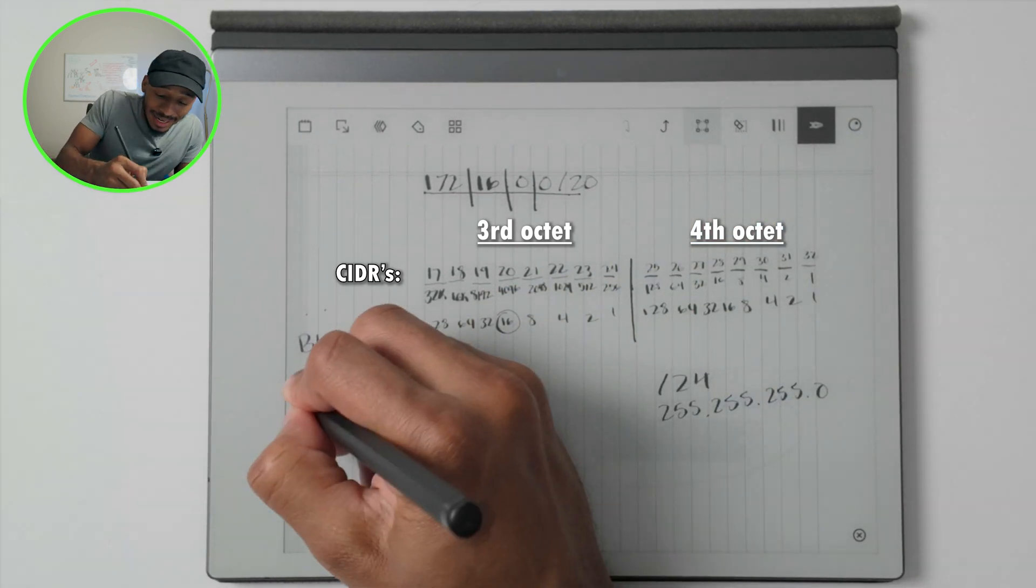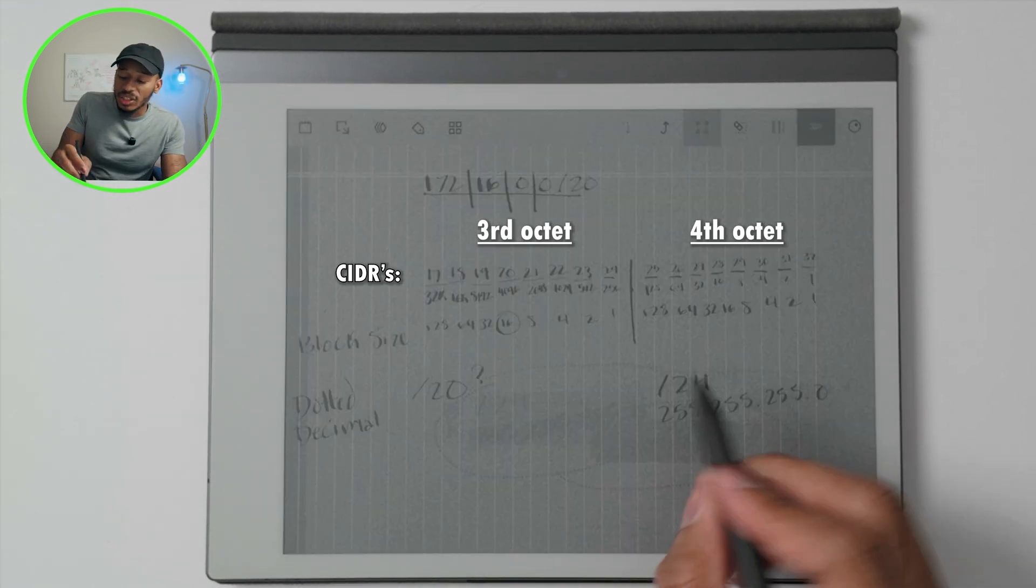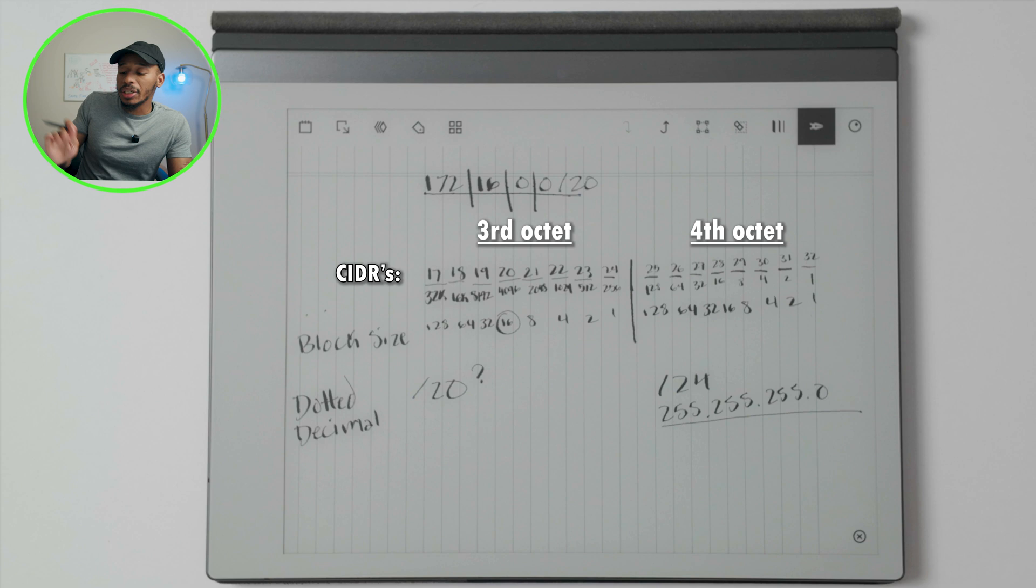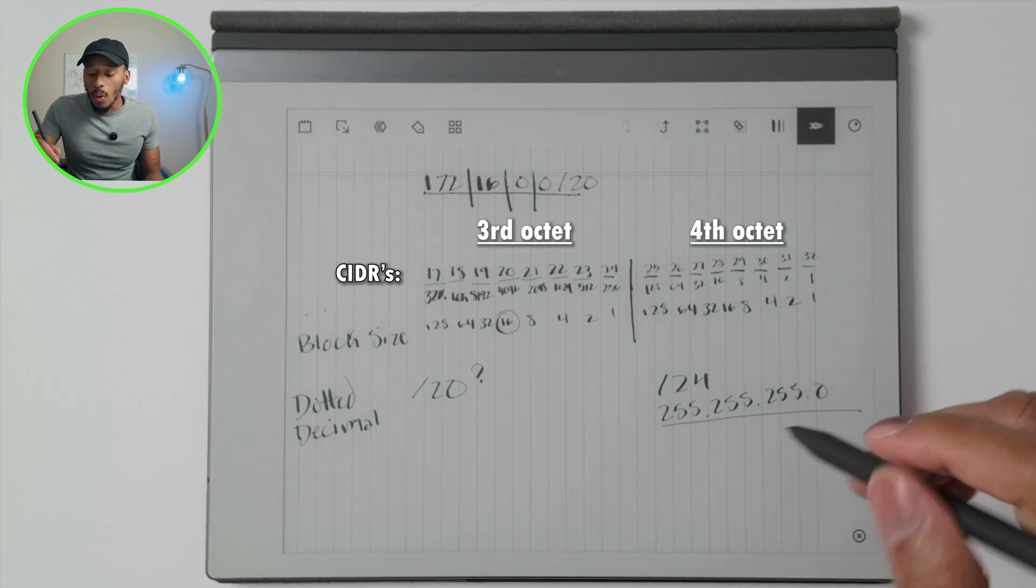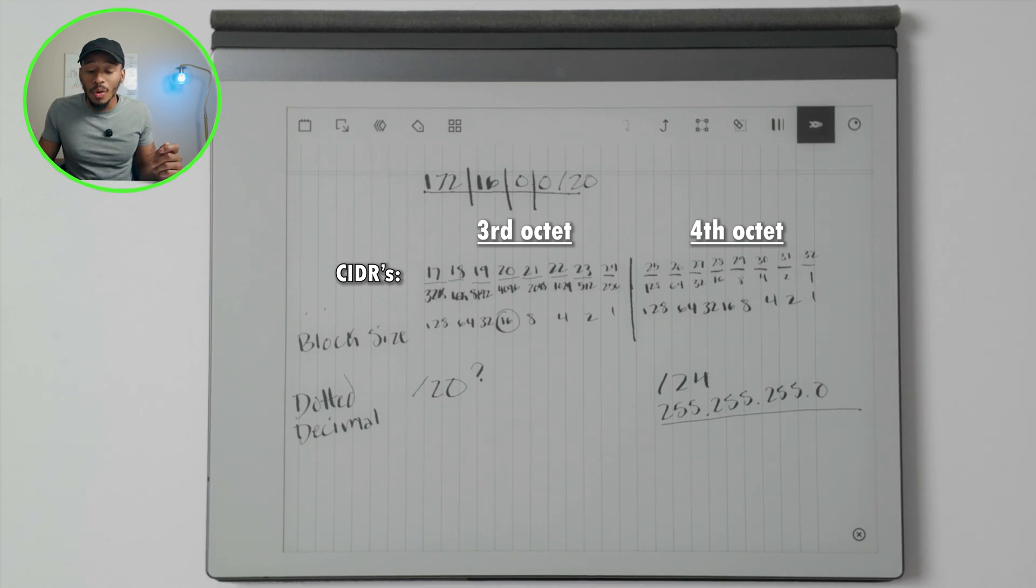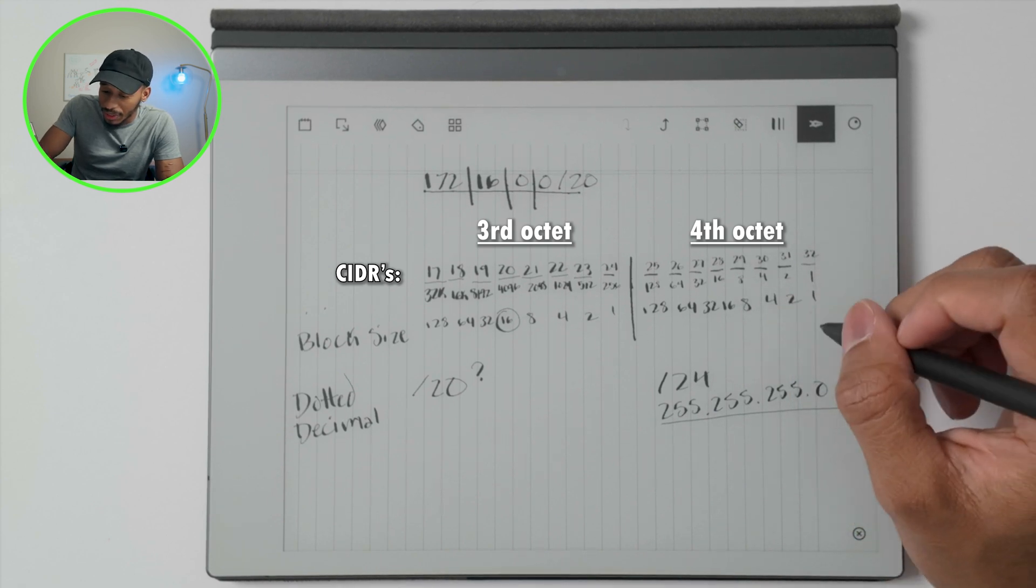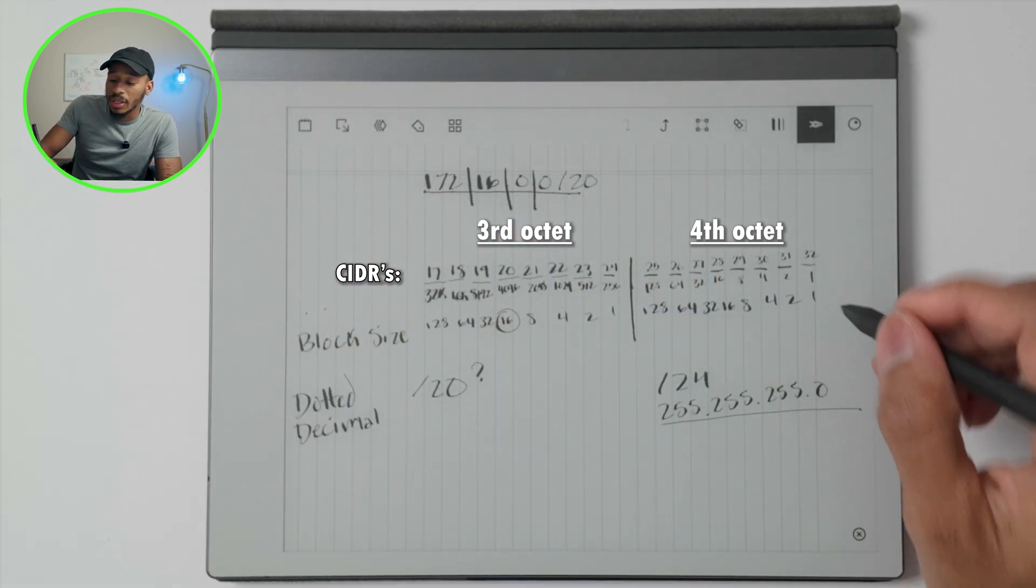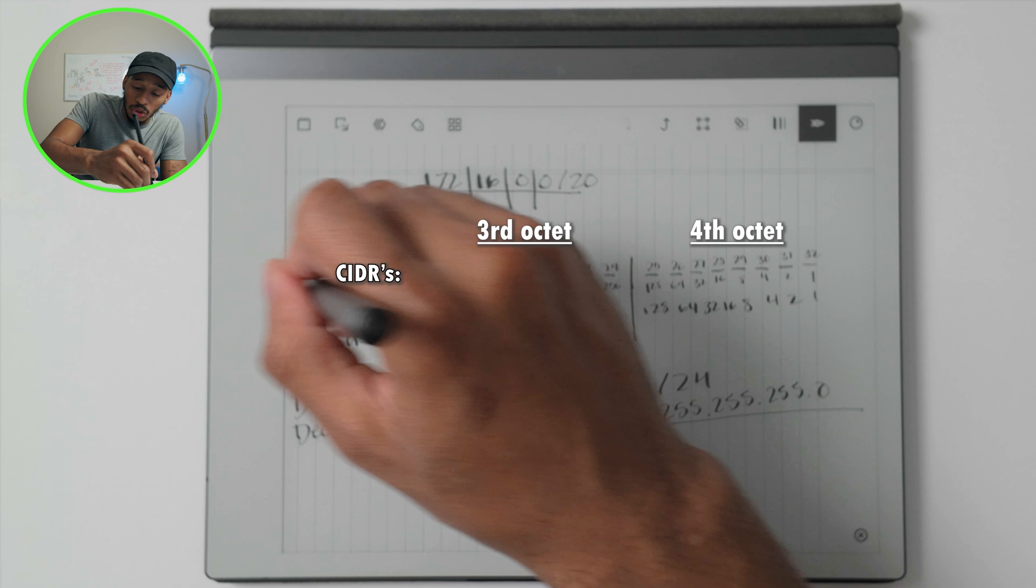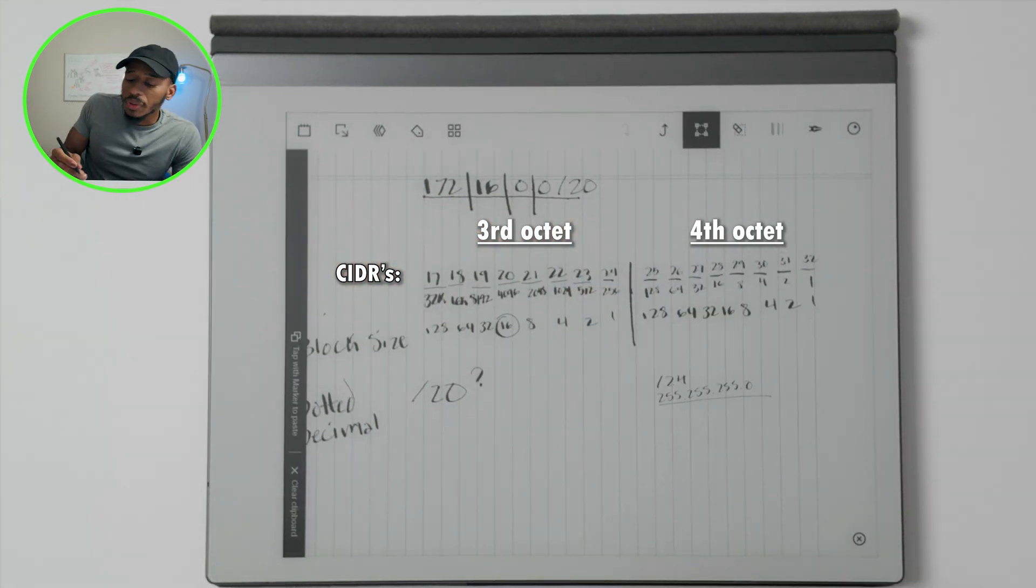The reason that it's written out in this value, or not necessarily the reason, but how you would go about identifying what a /24 would translate to in dotted decimal format is following this format right here. We have all the resources that we need right here with the block size value as well as the network address calculation that we did in the first row.